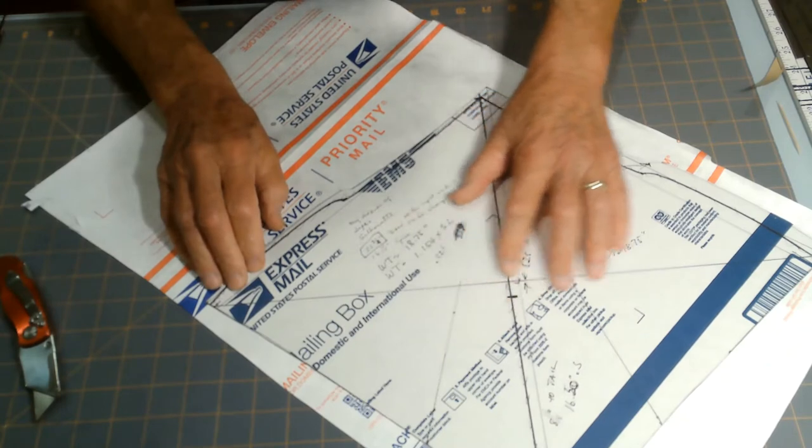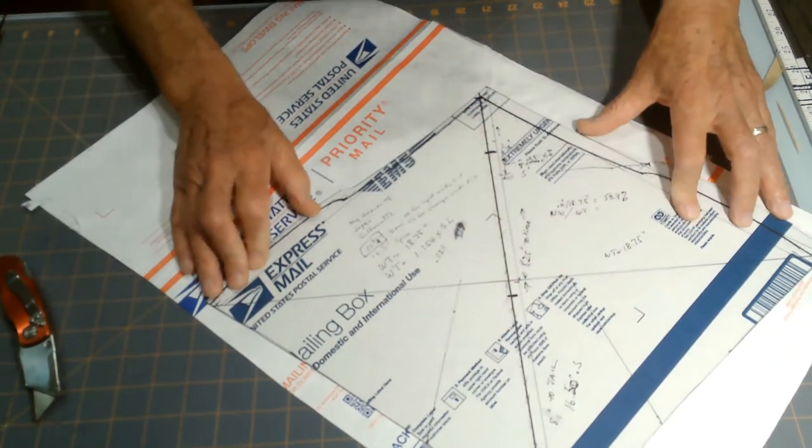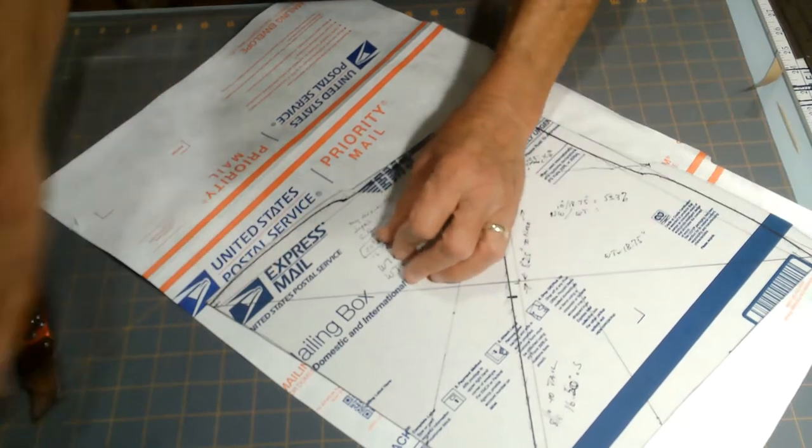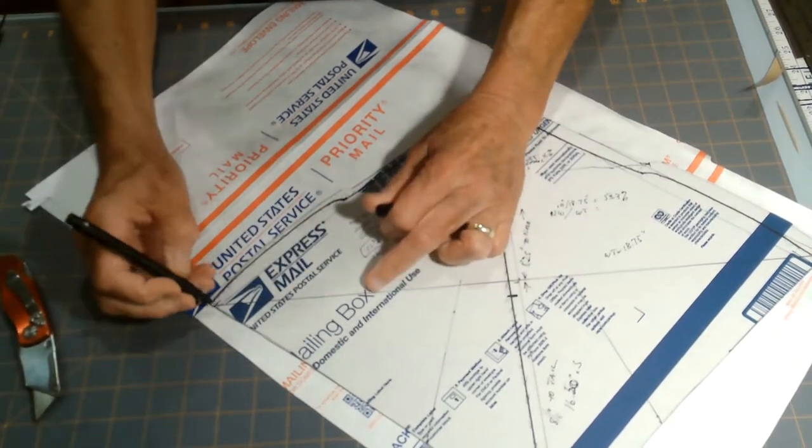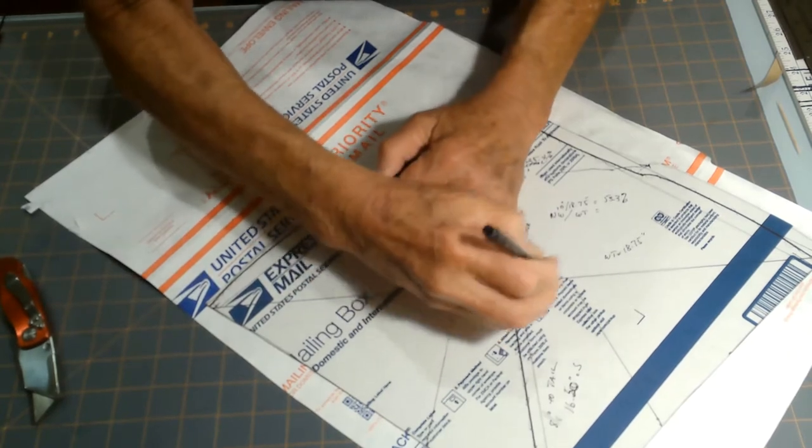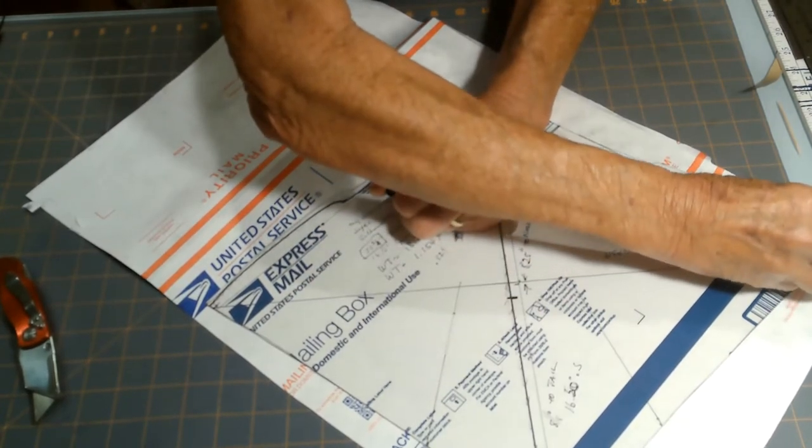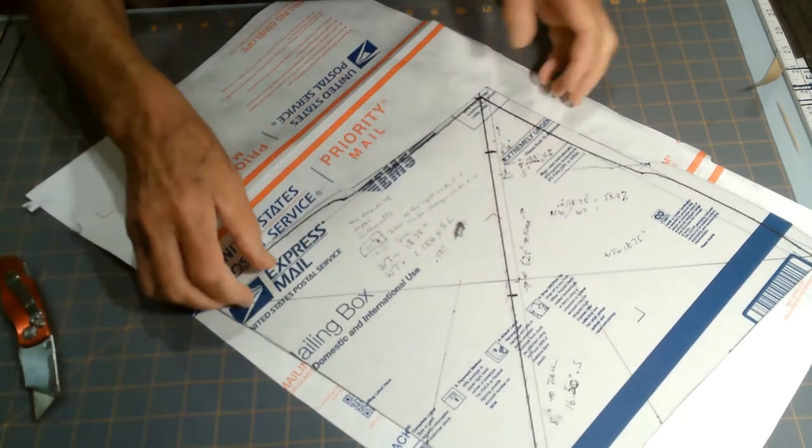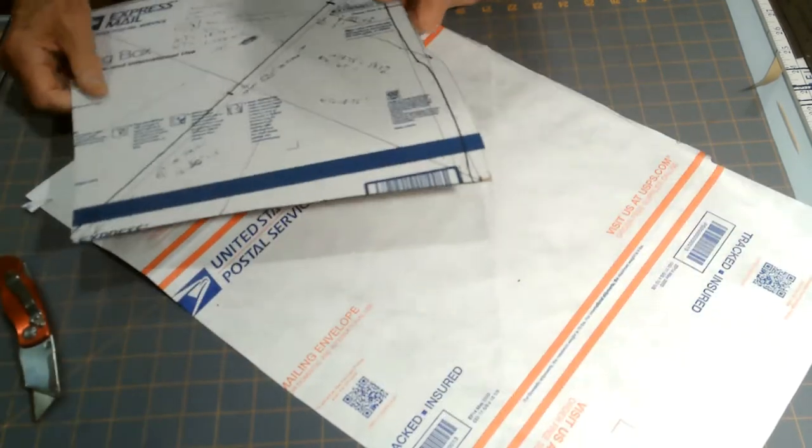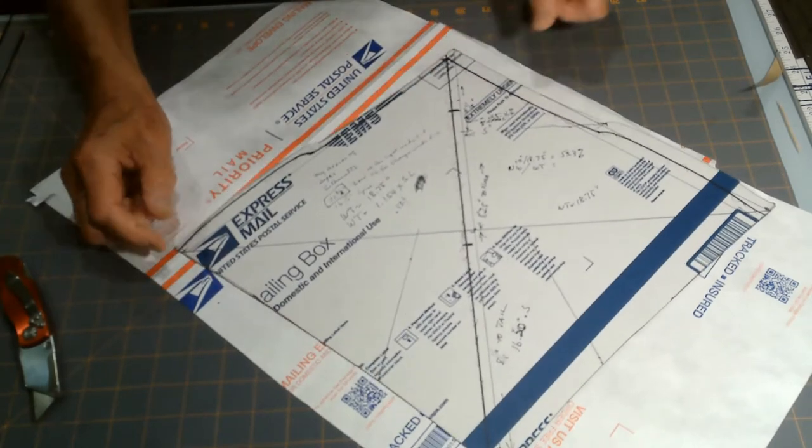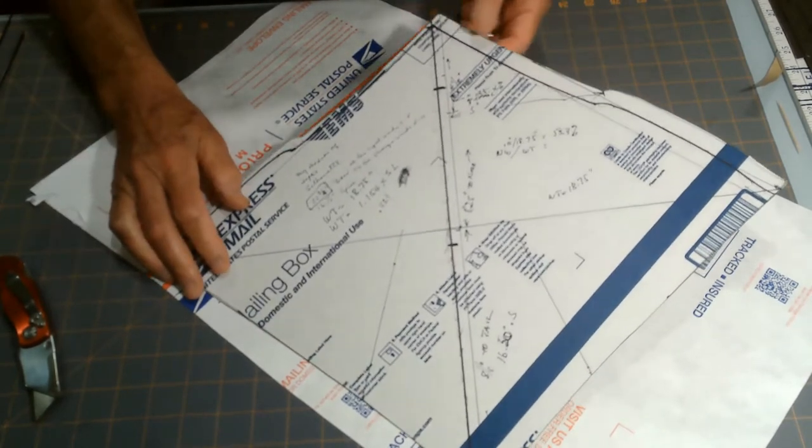I don't have to go back and measure or do anything else. It's all right there. I just get through with cutting it out and connect the lines. It makes it very simple and repeatable. So that's the way to do it with a full size template.